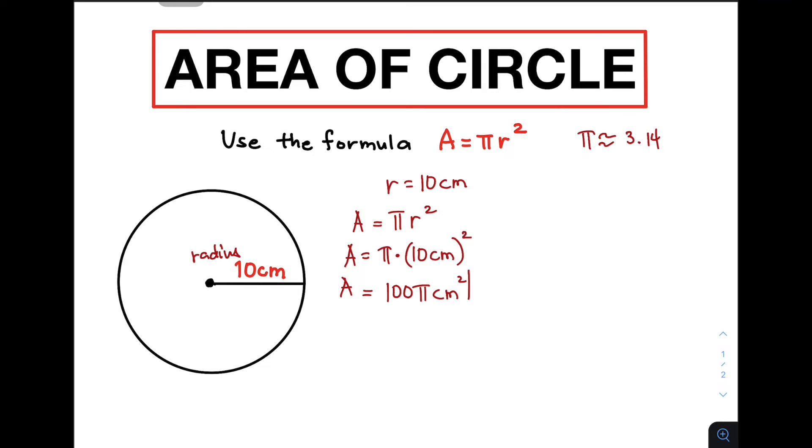This is the area. Now, if your teacher wants you to simplify this using the value of pi, 3.14, we can still do it. Simply do A equals 100 times 3.14 centimeters squared. I have replaced pi using the approximate value of 3.14, and this gives us the answer of area approximately 314 centimeters squared.